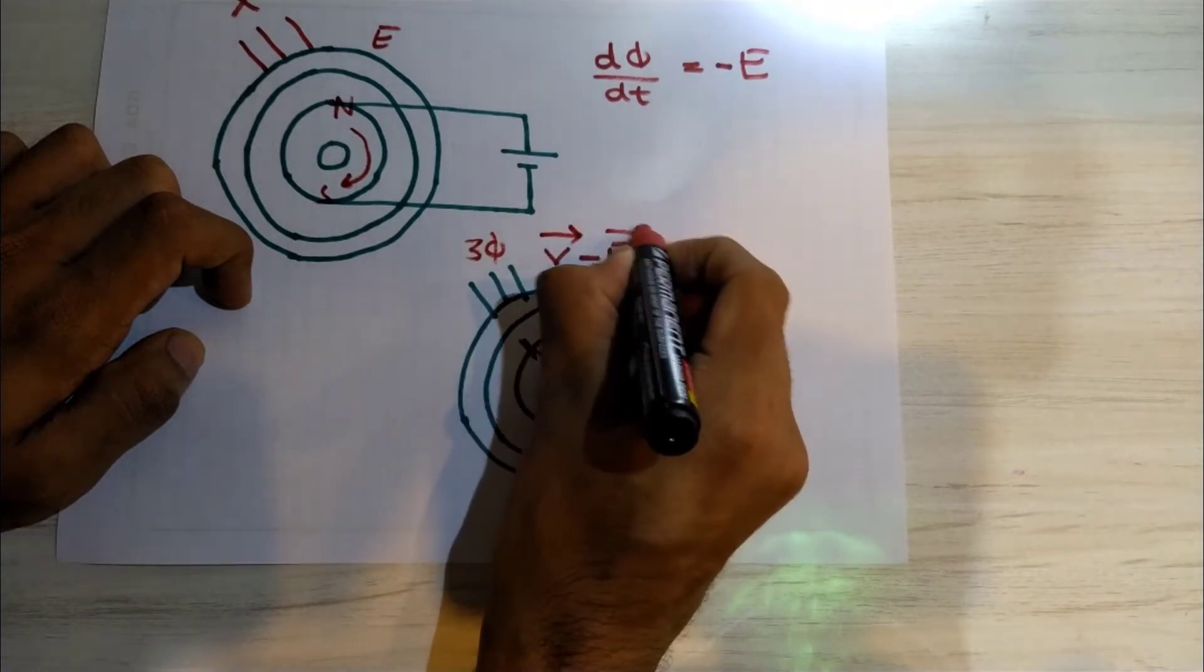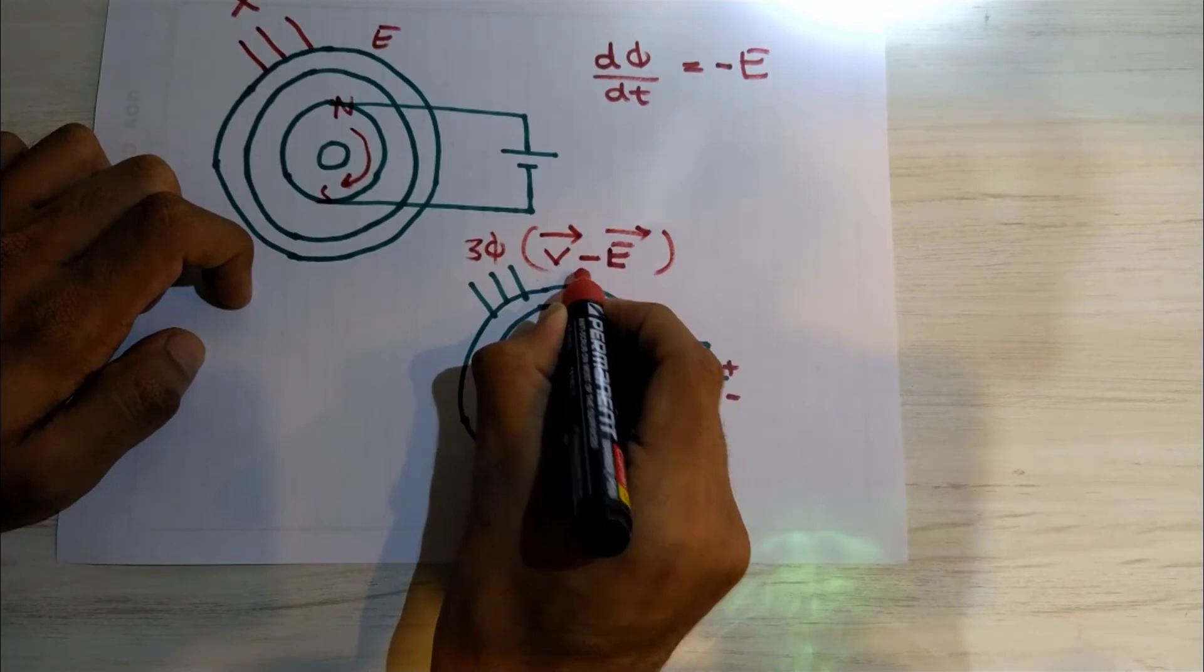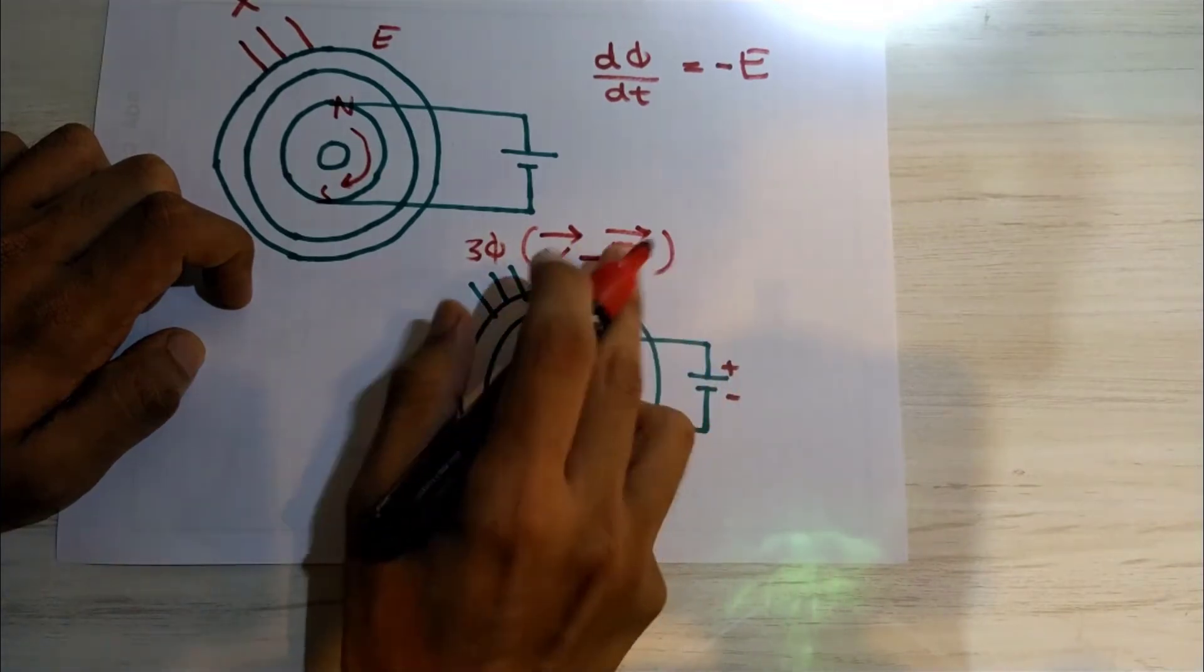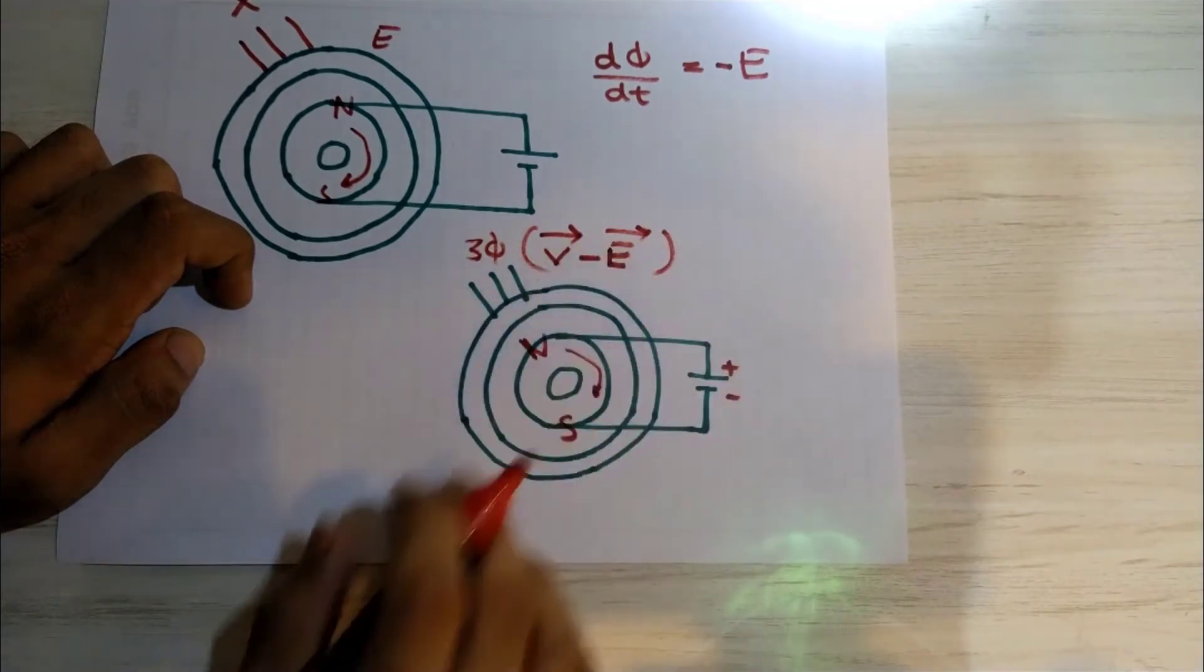Now this vector is the total EMF in the stator coil. This E is nothing but the back EMF.